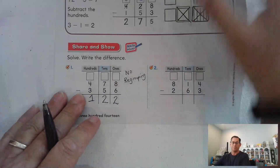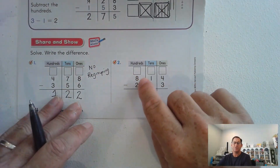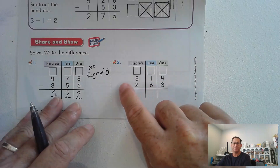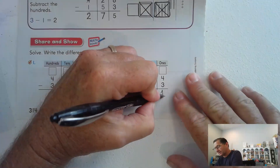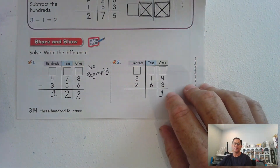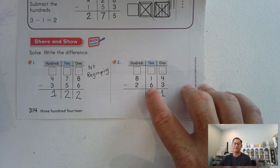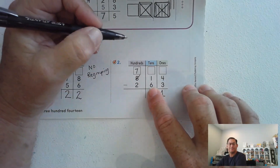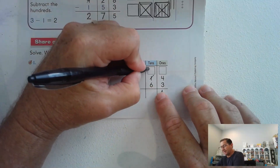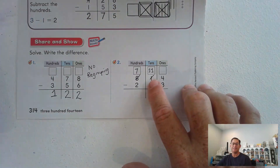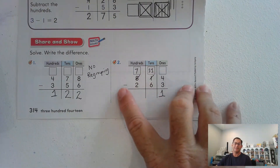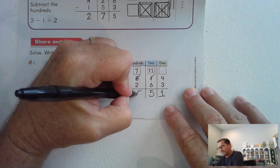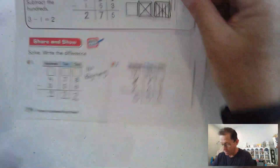Number two: 804 take away 263. I have 4 ones — can I take away 3 ones? Yes. Now at the tens, I have 1 ten and I have to take away 6 tens — we can't do that. So let's go to the hundreds, take one of the 8 hundreds and trade it for 10 tens. Now we have 11 tens. 11 tens minus 6 tens leaves 5 tens, and 700 minus 200 is 500.